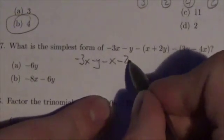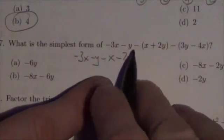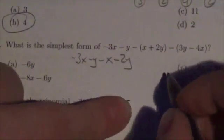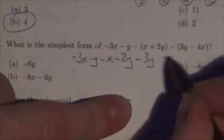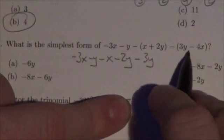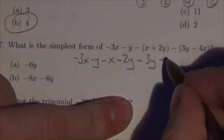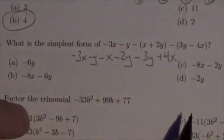They should be writing minus 2y, but they don't. They write positive 2y. Please remember that the negative distributes to both terms. And then over here, this will be minus 3y. Same thing. That negative distributes to both terms. So because this is a negative term, negative of a negative is going to make this positive 4x.